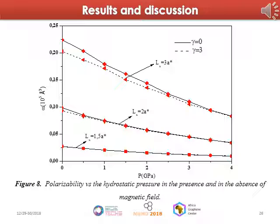In figure eight, we present the polarizability as a function of hydrostatic pressure in the absence and presence of the magnetic field, with gamma equal to 3. This figure shows a competition between the geometric confinement, the magnetic field, and the hydrostatic pressure. The polarizability is independent for small quantum boxes and becomes more sensitive for large quantum dots, especially under the simultaneous effect of hydrostatic pressure and magnetic field, reflecting the additional confinement due to the application of pressure and magnetic field. Both effects compress the wave function within the box, increasing the binding energy and consequently reducing the polarizability. Our results are in good agreement with the literature.